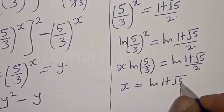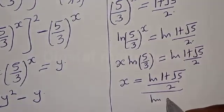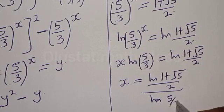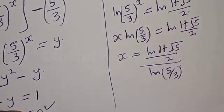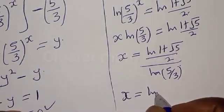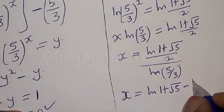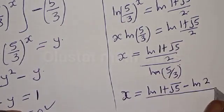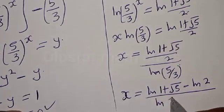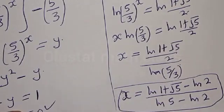Dividing both sides by natural log of (5/3), we get s is equal to natural log of (1 plus square root of 5) divided by 2, all divided by natural log of (5/3). Our final answer can be written as s is equal to natural log of (1 plus square root of 5) minus natural log of 2, divided by natural log of 5 minus natural log of 3. If you have enjoyed the class, please don't forget to like, share, comment and subscribe. Thank you.